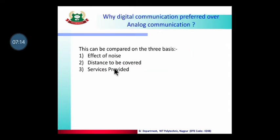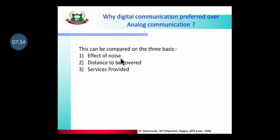Now why do we use digital communication instead of analog communication? There are three basic reasons: first, the effect of noise; second, distance to be covered; and third, service provider. Regarding the effect of noise — in electronics, noise means an error signal. What effect can error have on the analog signal?